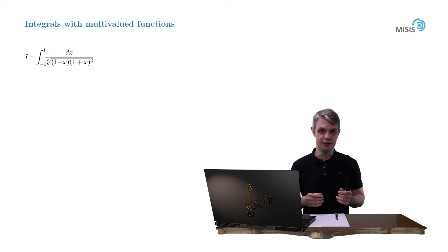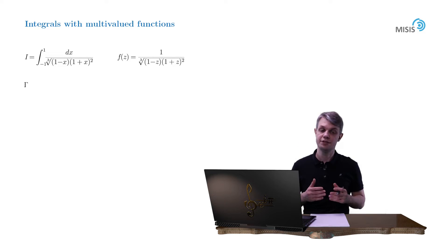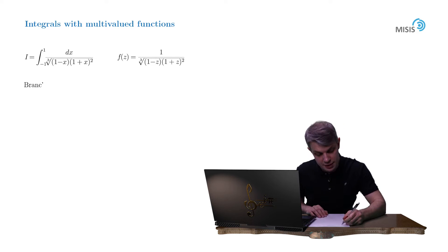As you clearly see, the integral contains a cubic root, that is a multivalued function. Let's denote it as f(z). It has two branch points, z equals negative 1 and z equals 1.